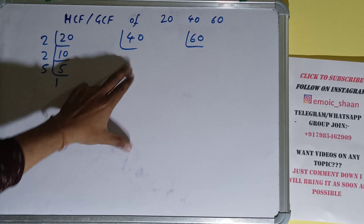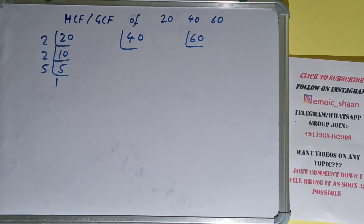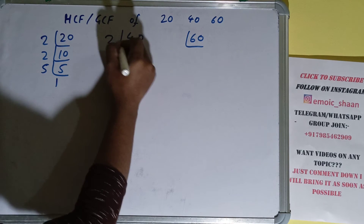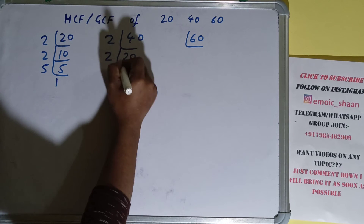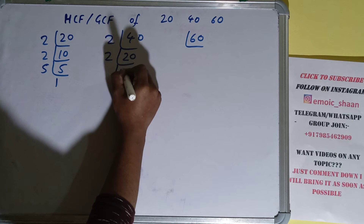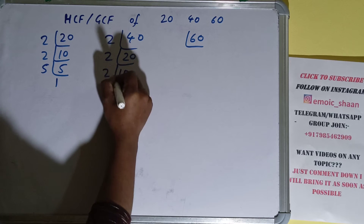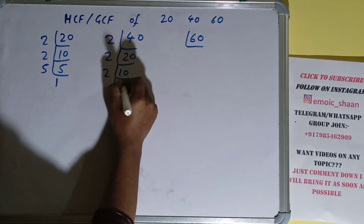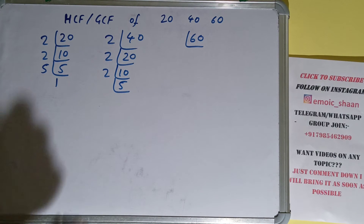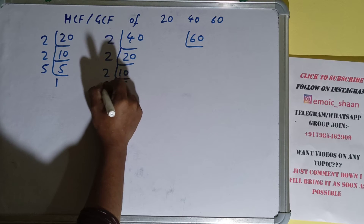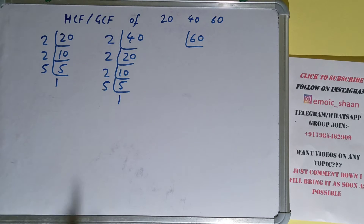Now we do the same with 40. Is 40 divisible by 2? Yes, giving us 20. 20 is again divisible by 2, giving us 10. 10 is again divisible by 2, giving us 5. 5 is a prime number, divisible only by itself, giving us 1. We're done with 40.